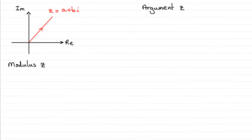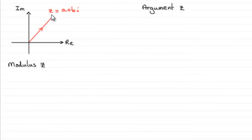In this video, I want to introduce you to something called the modulus and the argument of a complex number z. What I've got here is a general complex number z equals a plus bi drawn on an Argand diagram.